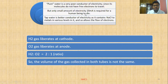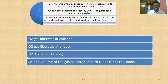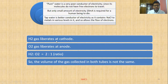From the notes: Pure water is a very poor conductor of electricity since its molecules do not have free electrons to travel. Only about 20 milliamperes of electricity is required for a human being to die. Tap water is a better conductor as it contains NaCl and metals, allowing electron flow. H₂ (hydrogen gas) is liberated at the cathode as it is a cation, and oxygen is liberated at the anode as it is an anion. The volume ratio of H₂ to O₂ is 2:1.